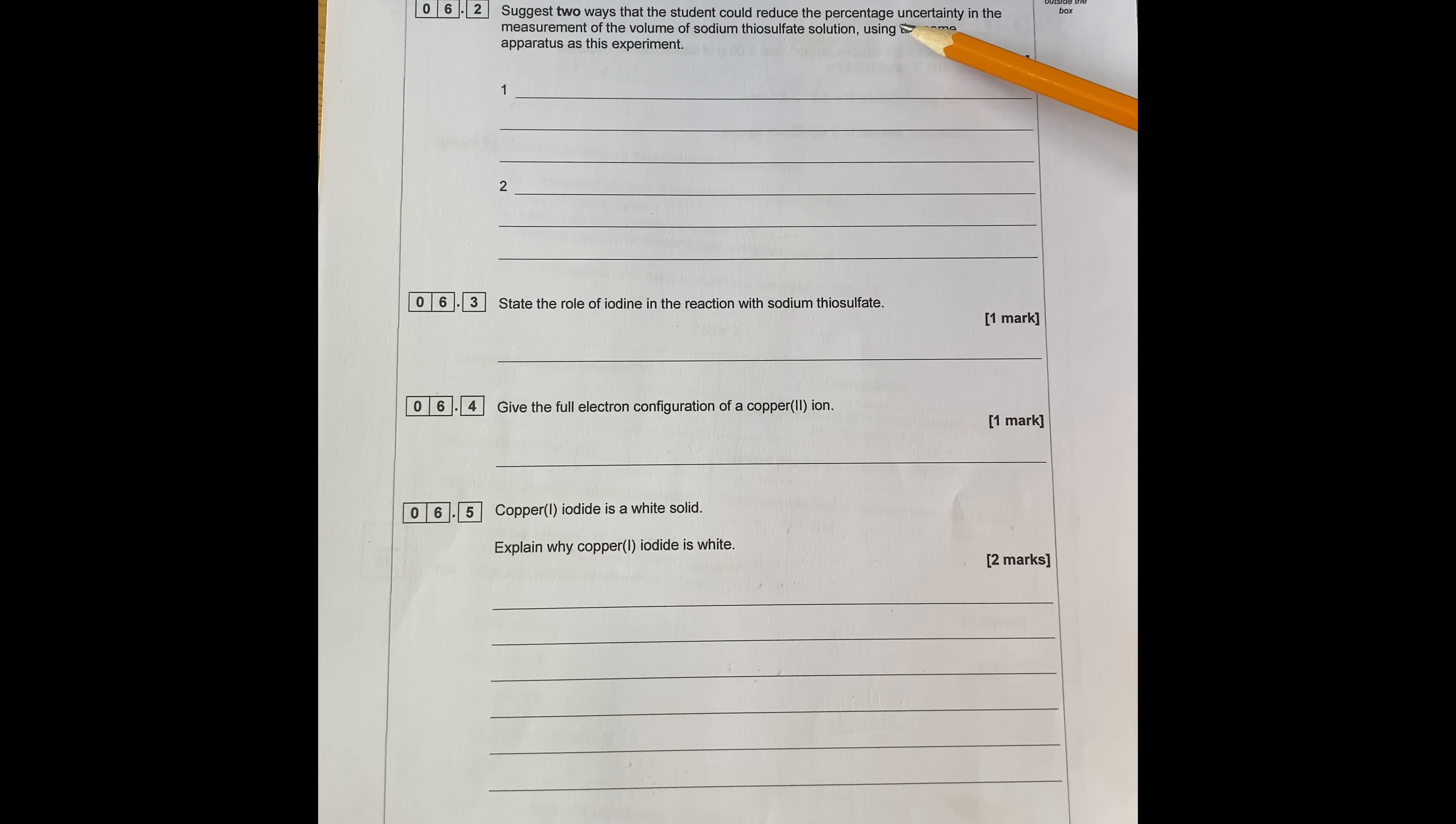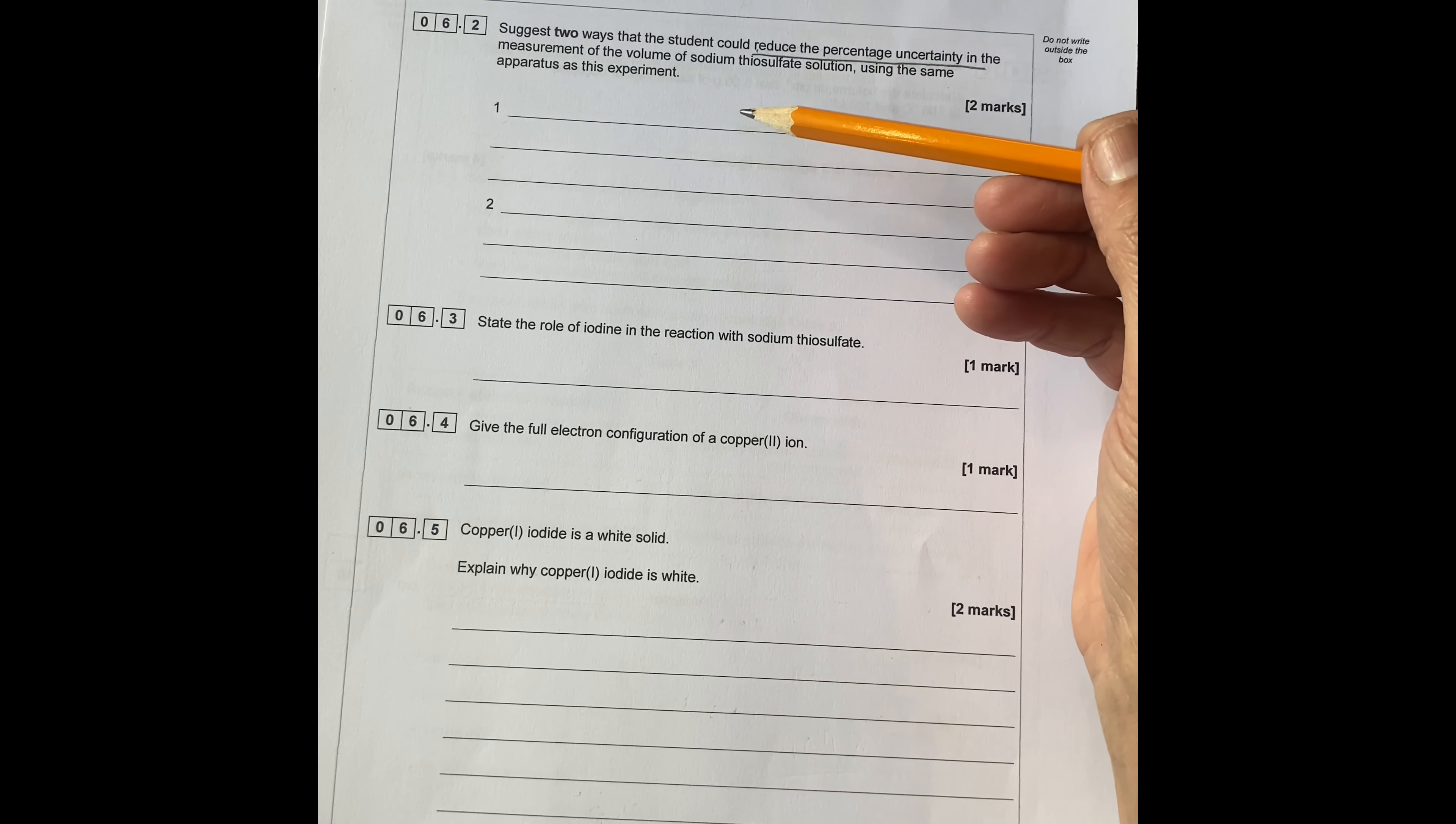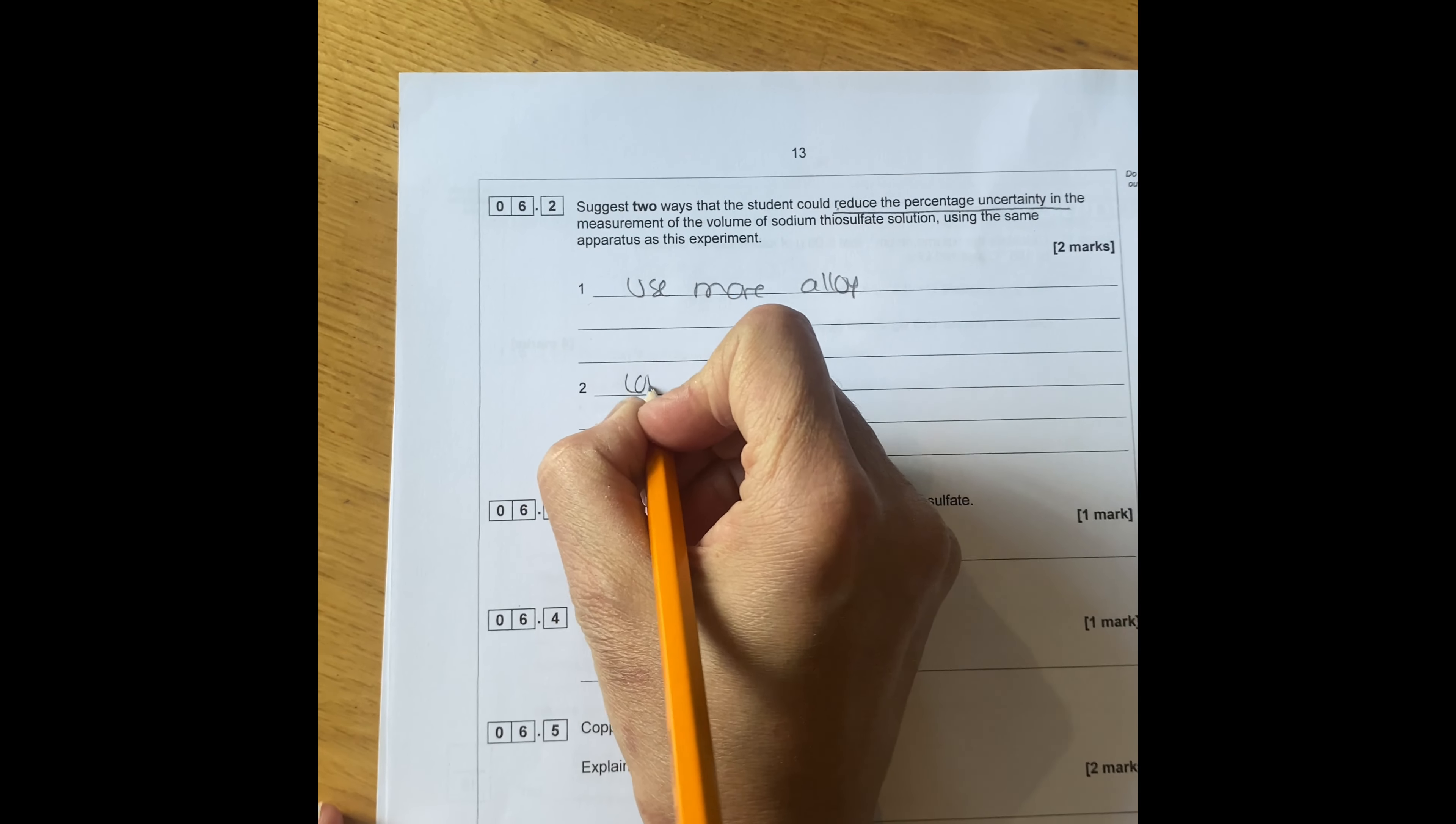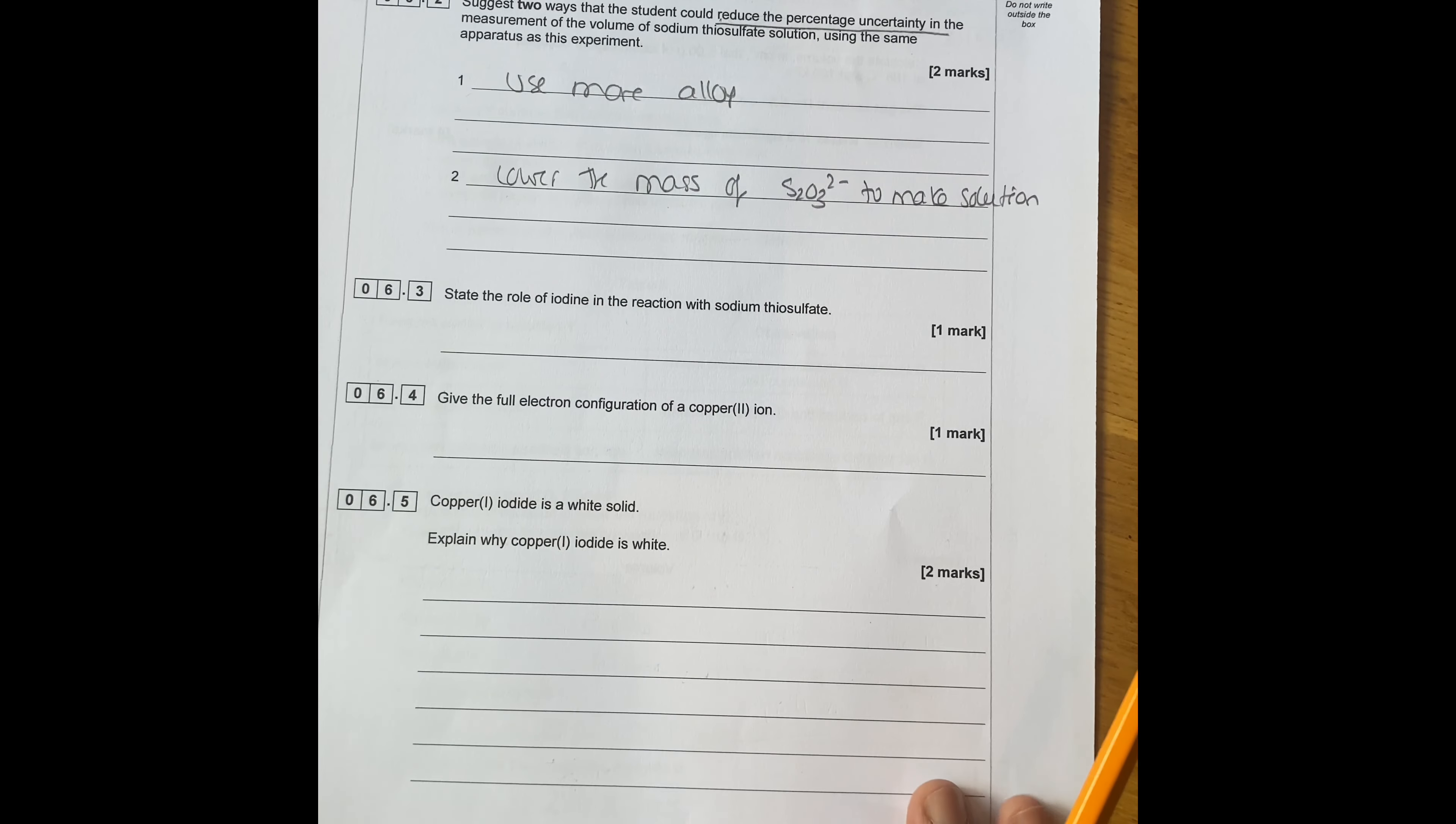So just two ways why the student could reduce the percentage uncertainty in a measurement of the volume sodium thiosulfate. So you want to reduce, not increase. So you want to reduce the percentage uncertainty, make it smaller. So you have to increase the amount of your mass of whatever you have, using the same apparatus as the experiment. So first thing you do, you can use more alloy, so increase the mass. Second, lower the mass of thiosulfate to make the solution. So lower the mass of S2O3 2 minus to make solution. So you make it more dilute solution. So you weigh less than that. So therefore either of them would work, will change the uncertainty.